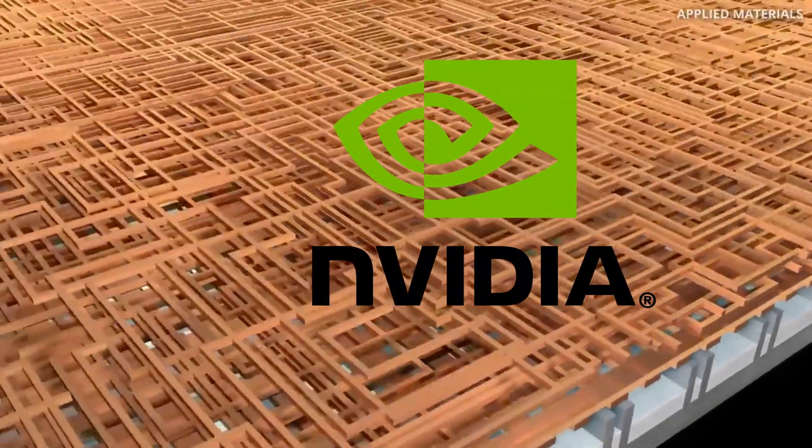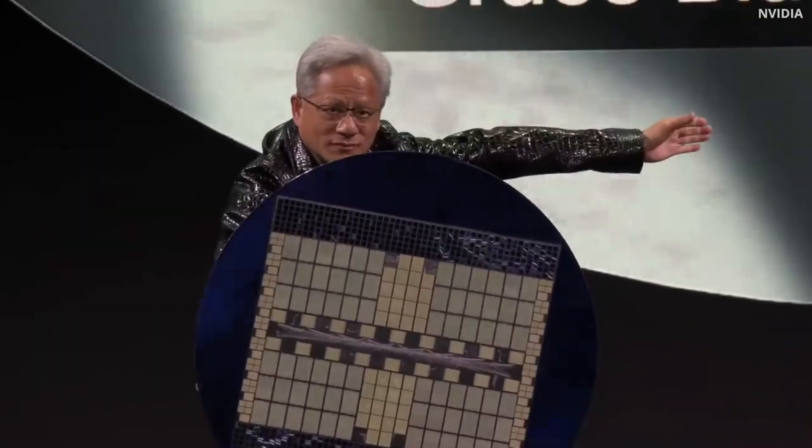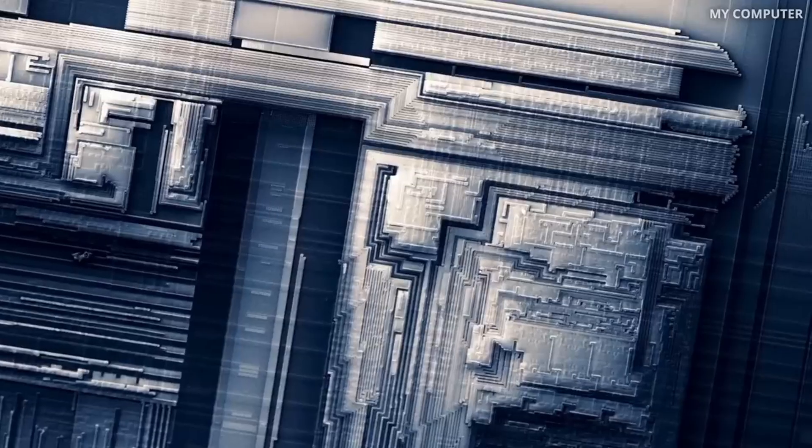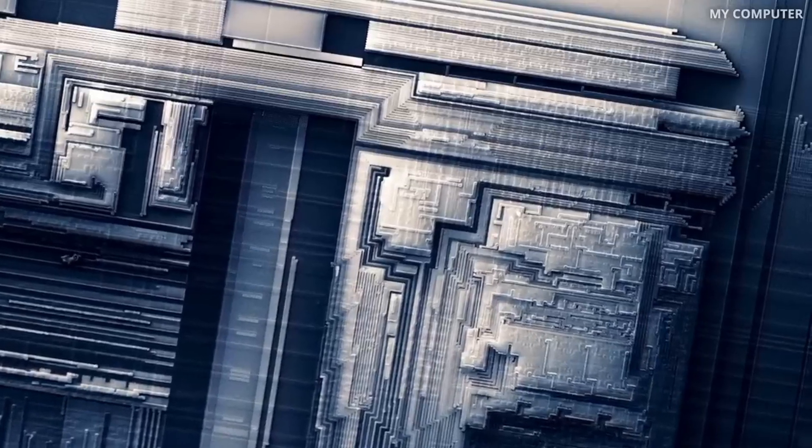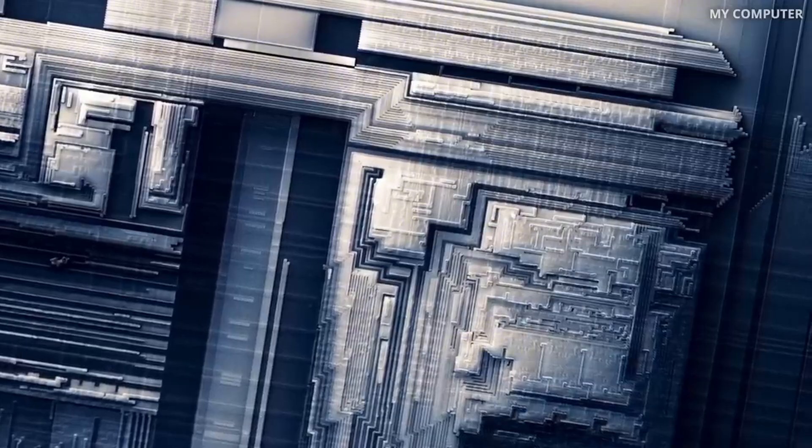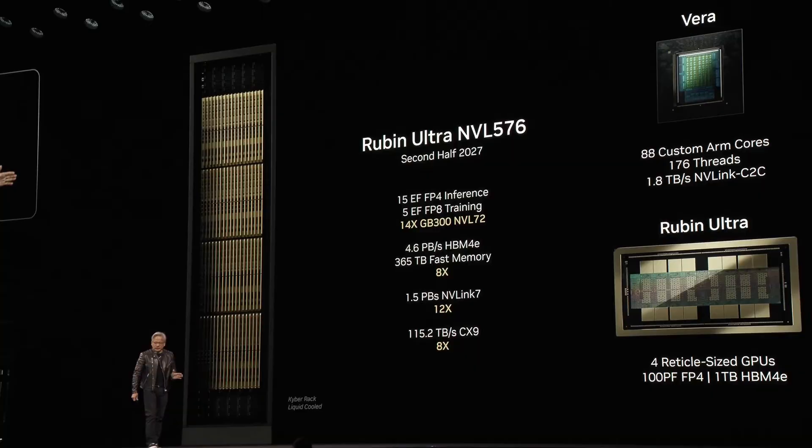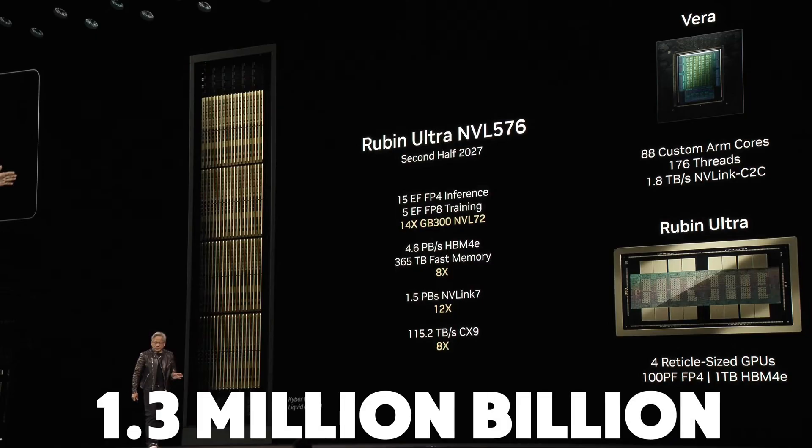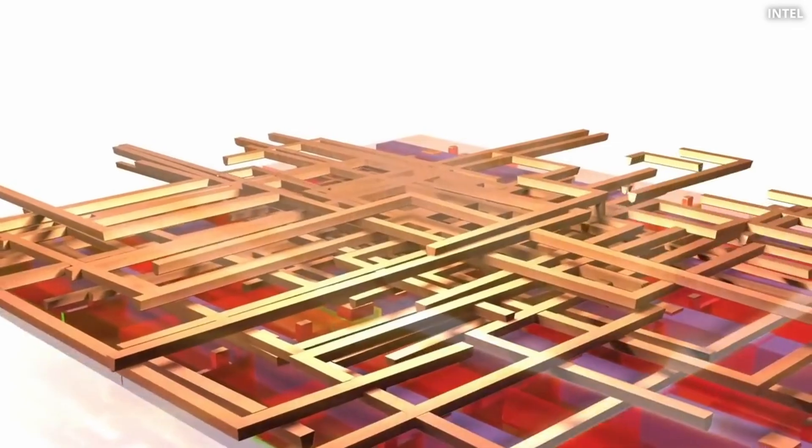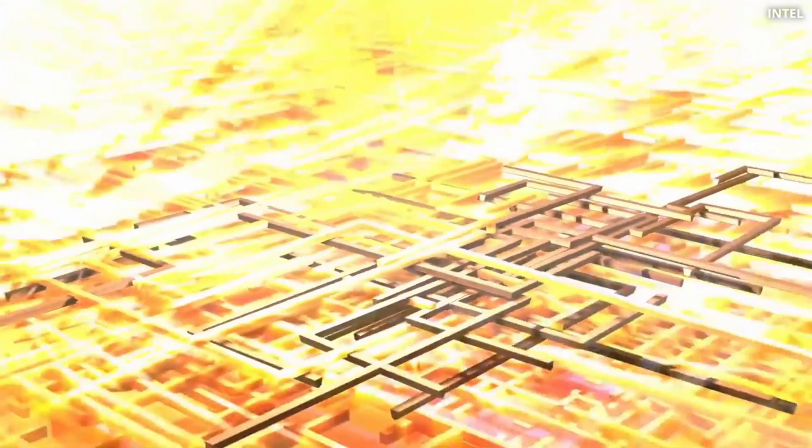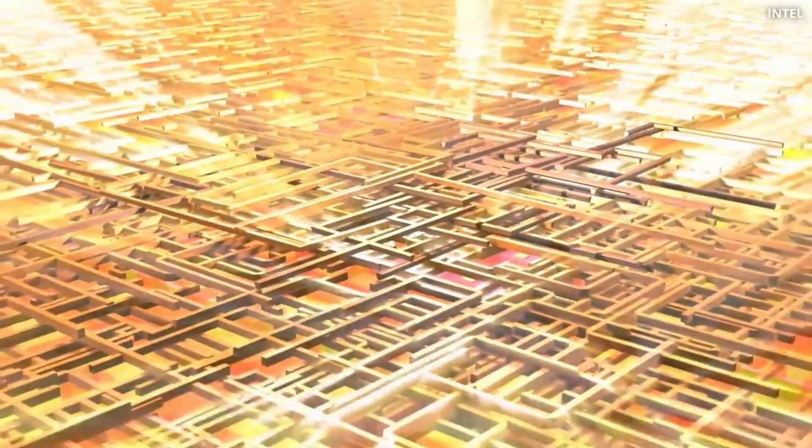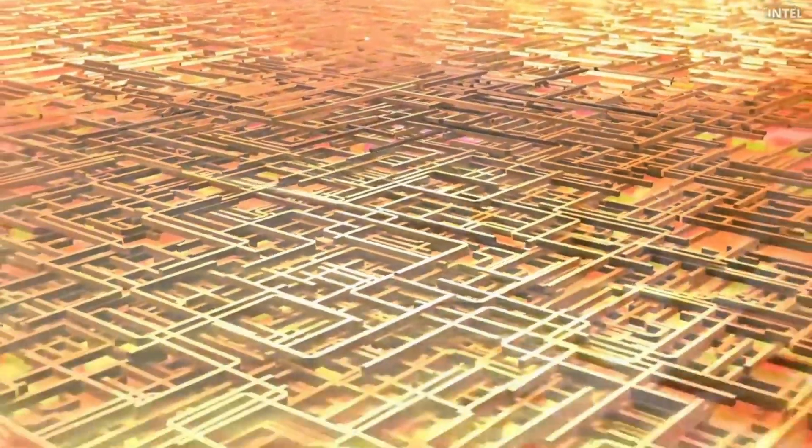Take NVIDIA as an example. Their current GPU, the Blackwell, is already astonishing with 28 billion transistors. But what's even more insane is what comes next. Their upcoming Rubin platform could pack more than a quadrillion, that's 1.3 million billion transistors into a single server. This isn't a far-off dream. It's happening right now, and it's happening fast.